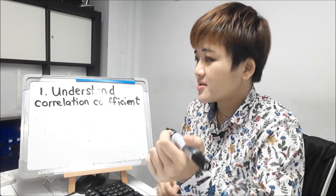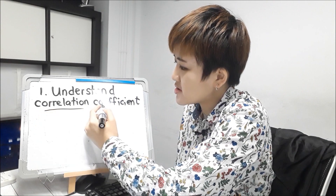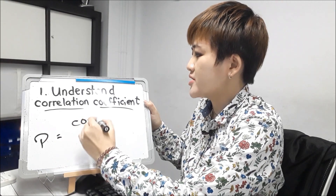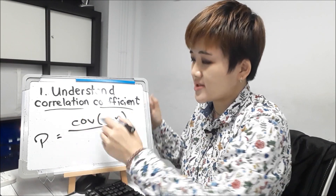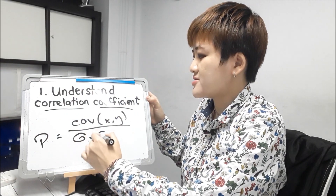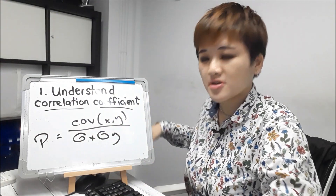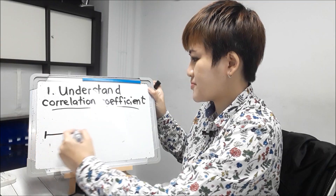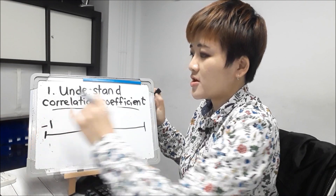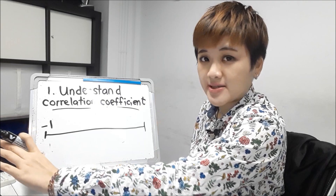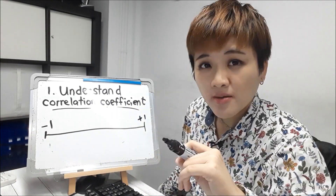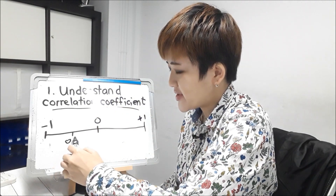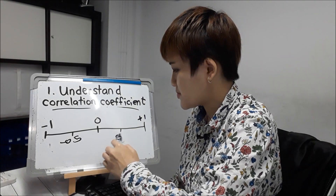Another more specific way to measure this relationship is to look at the correlation coefficient. For the math geeks: correlation equals the covariance of the two data streams — the two assets you're looking at — divided by their standard deviation. If that's too complicated, think of it as a scale from negative 1 all the way to positive 1, with 0 in the middle. You can further divide it into negative 0.5 and positive 0.5.